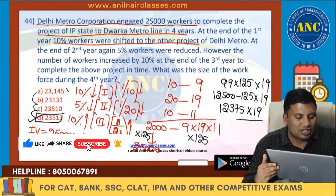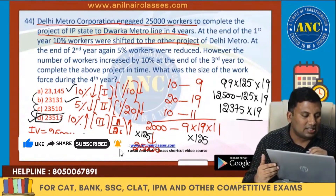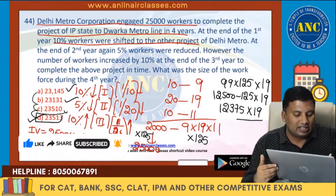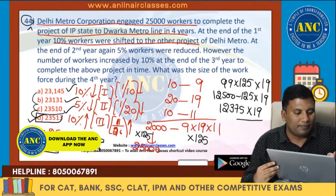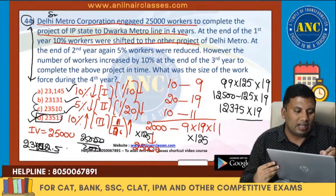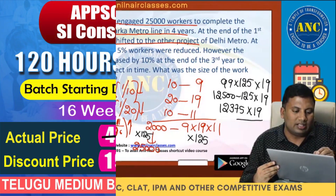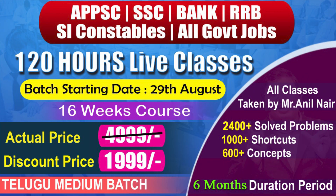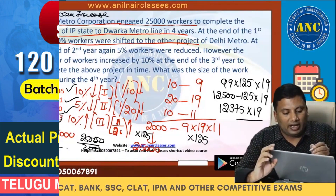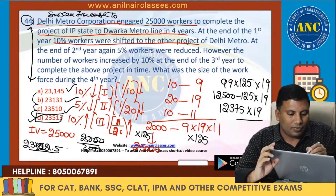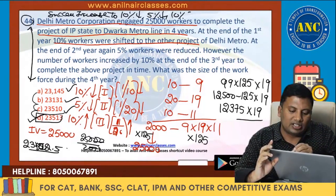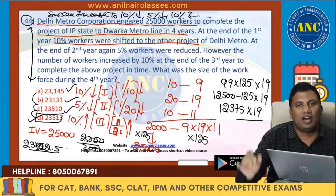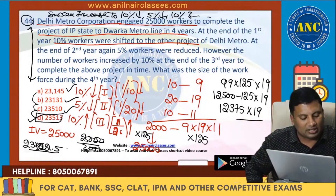Very easy question: first year 10% decrease, second year 5% decrease, third year 10% increase. Instead of giving this passage about the Delhi Metro project, he could have simply asked: '10%, 5%, and 10% successive changes — what is the equivalent?' He made students' lives complicated with a big passage, but it is not required.